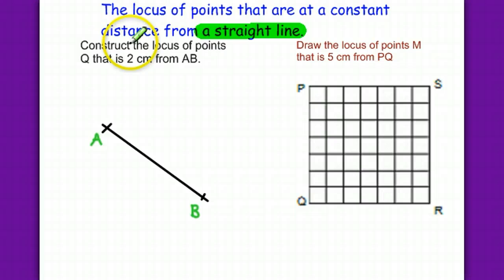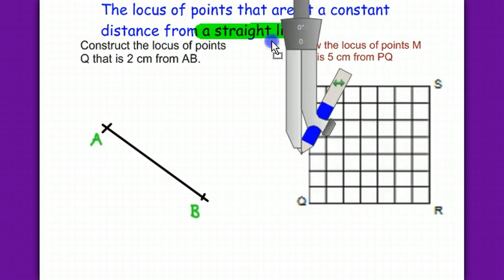For example, construct the locus of points Q that is 2cm from AB. Now here is AB and the locus is two parallel lines, one here and the other one here. We need to construct that.